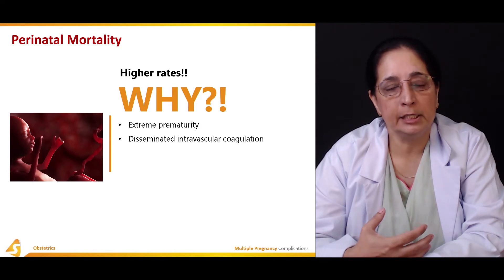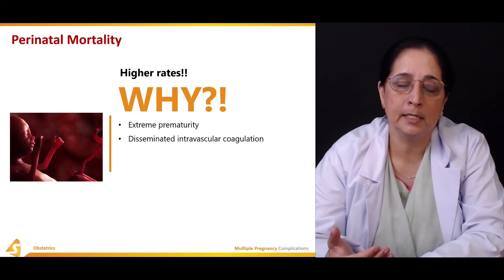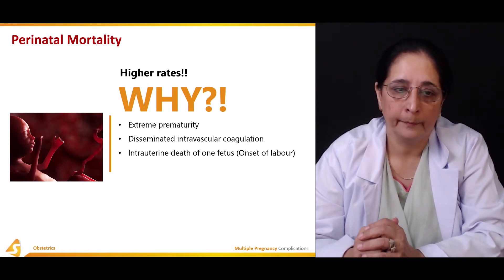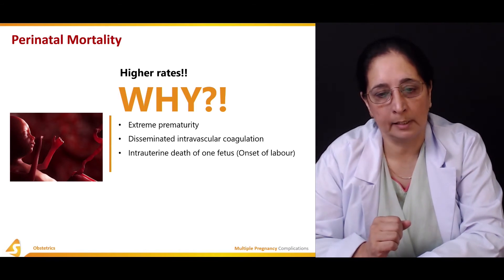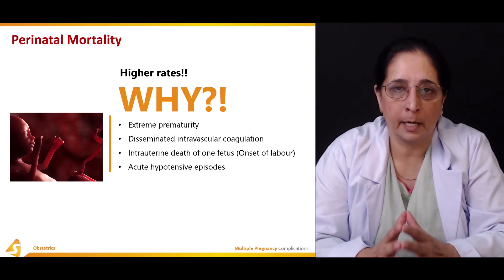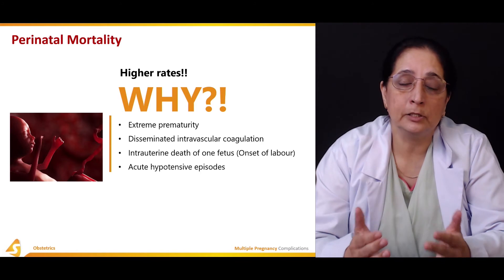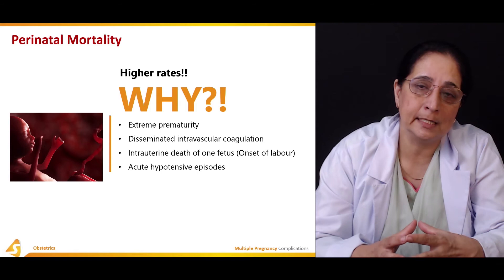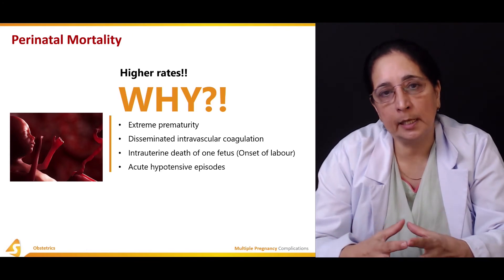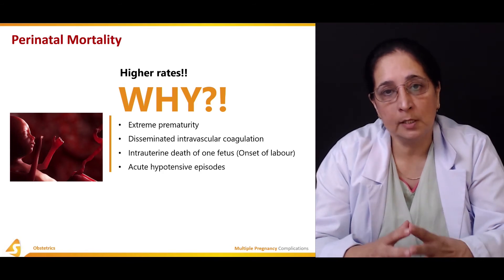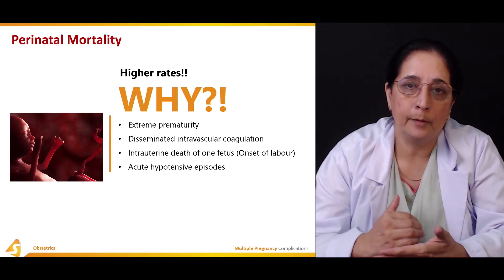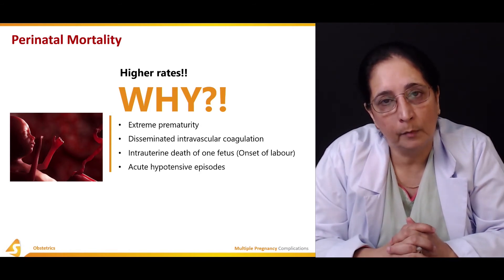DIC — disseminated intravascular coagulation — is another reason for perinatal mortality. Intrauterine death of one fetus is also a common cause. Acute hypotensive episodes can occur when one fetus dies in utero; stillbirth can lead to DIC, poor circulation, and septicemia, all of which can cause hypotensive episodes and ultimately perinatal mortality.